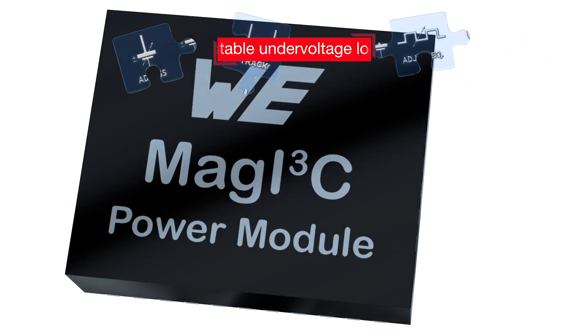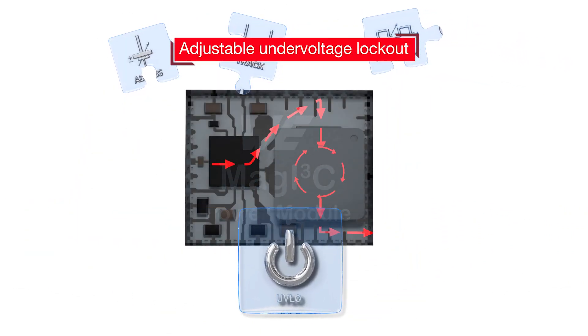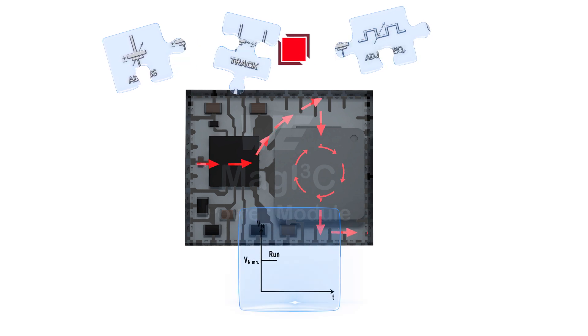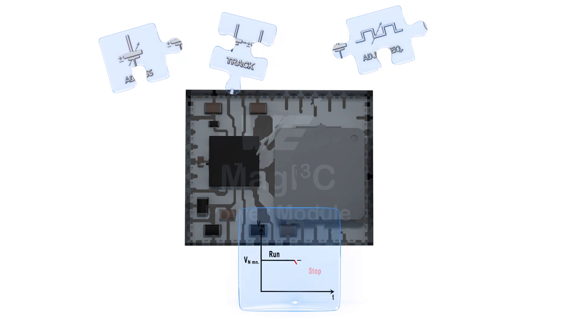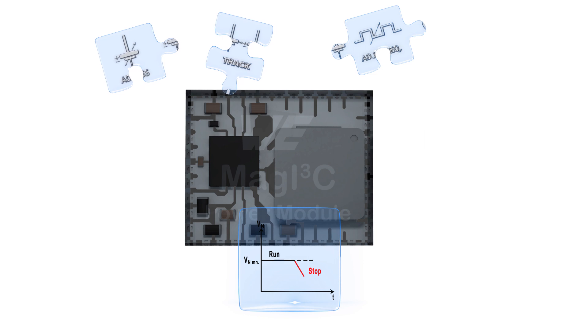The under voltage lockout turns off the output when the input voltage drops below your limit to avoid an undefined behavior during input voltage drops.